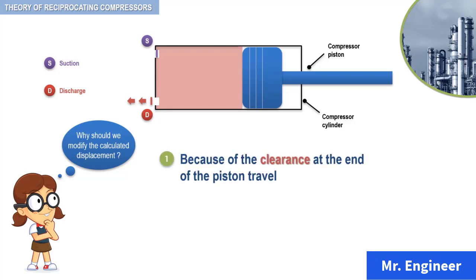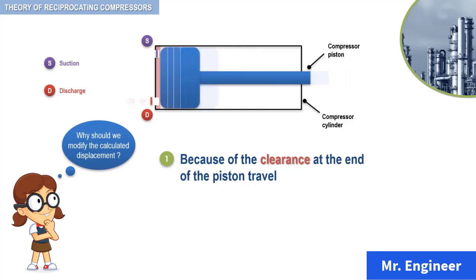Earlier in this section, when the compression cycle was described, a portion of the pressure volume indicator diagram was referred to as the expansion portion of the cycle. The gas trapped in the clearance area expands and partially refills the cylinder, taking away some of the capacity.